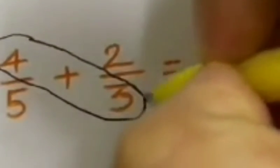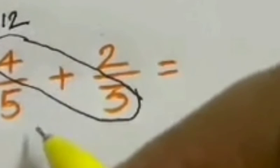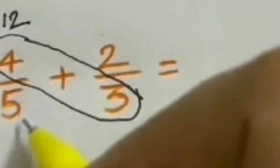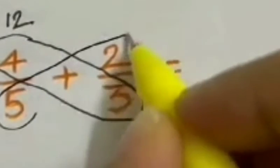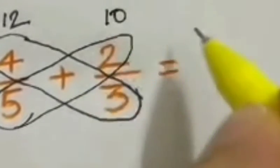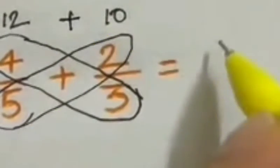Four times three equals twelve. Yung twelve, ilangay natin sa taas para i-compute natin mamaya. Then five times two equals ten. I-plus lang natin. Answer niya is twenty-two.